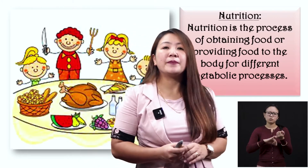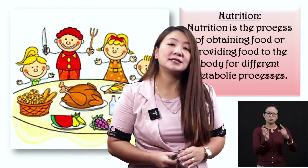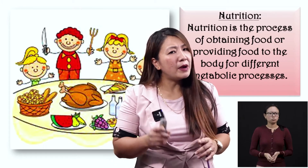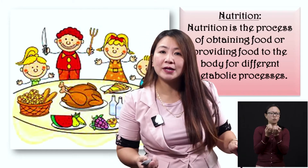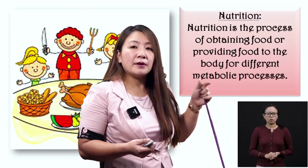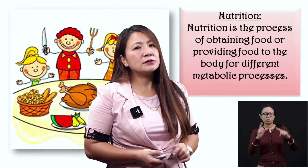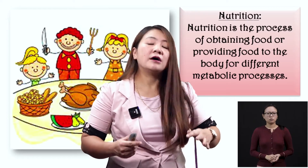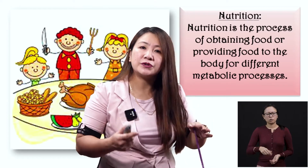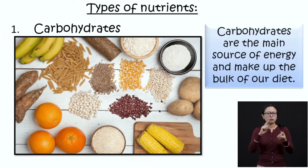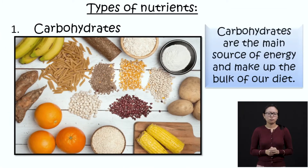Now, do you remember in your class four, you have already studied healthy food? Do you remember the different types of nutrients? Nutrients are the substances contained in food. So let us have a quick revision. The different types of nutrients — the first we talked about in class four was carbohydrates.